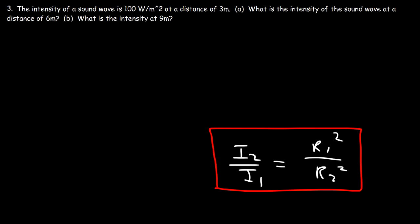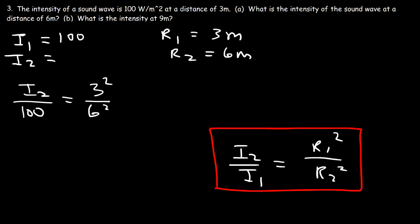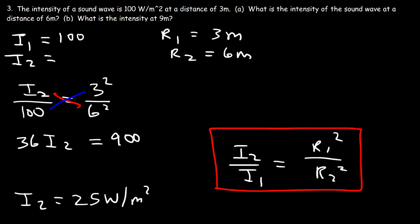For part a: I₁ is 100 at r₁ = 3 meters, and we want I₂ at r₂ = 6 meters. So I₂/100 = 3² / 6². Cross-multiplying: I₂ × 36 = 100 × 9 = 900, so I₂ = 900/36 = 25 watts per square meter, which confirms our earlier answer.